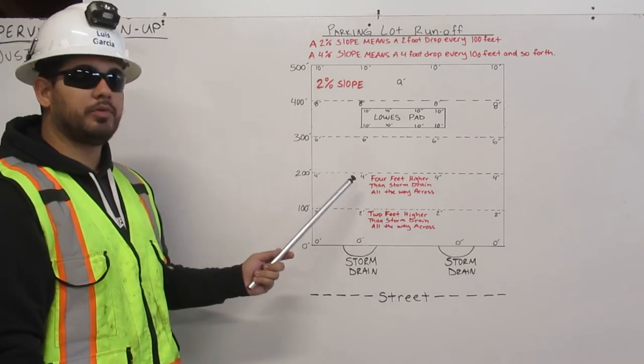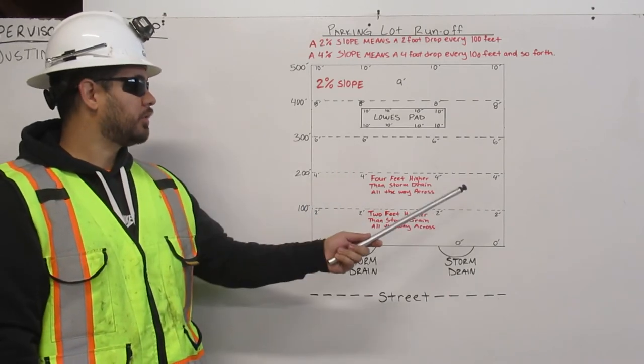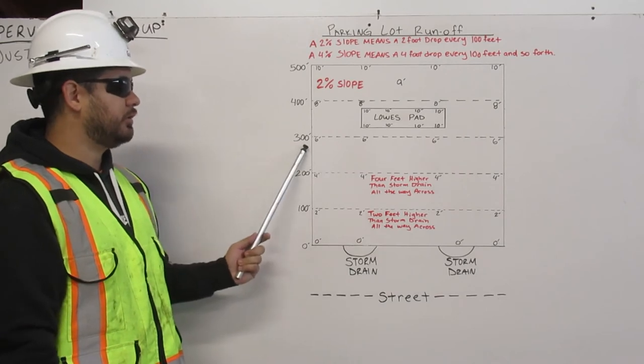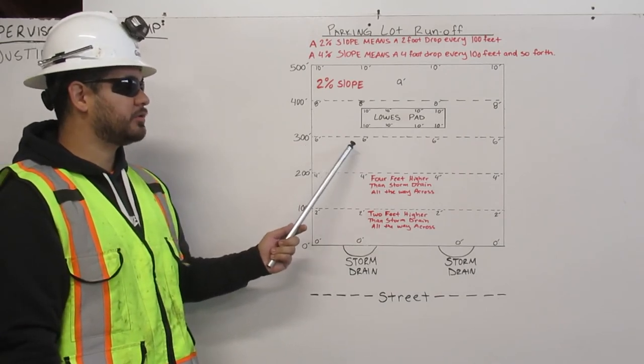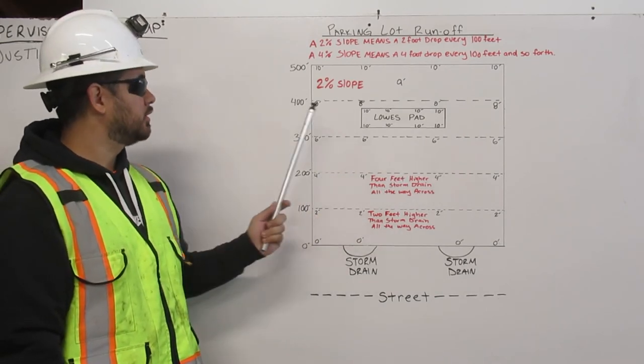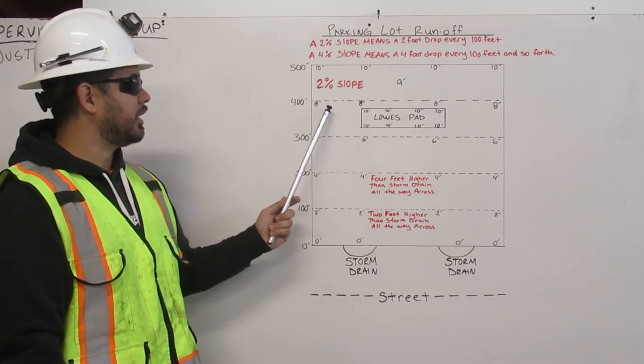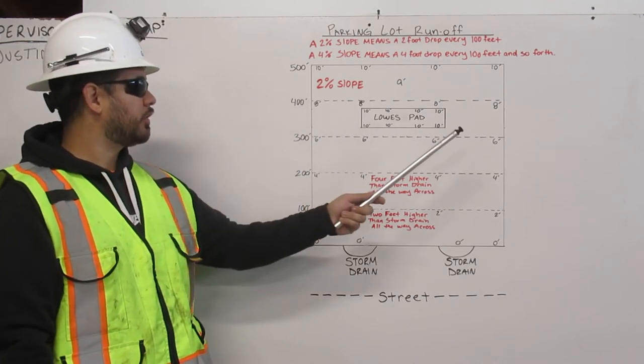At 200 feet, we're going to make it 4 feet higher than the storm drains all the way across. At 300 feet, we're going to make it 6 feet higher than the storm drains all the way across. At 400 feet, we're going to make it 8 feet higher than the storm drain all the way across.